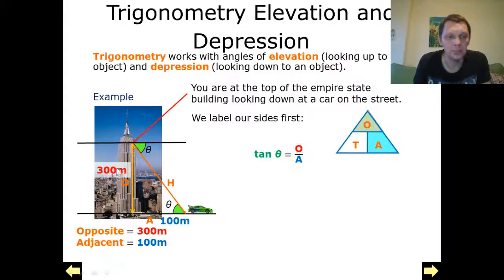My opposite is 300 metres, my adjacent is 100 metres, and I'm going to use tan theta equals opposite over adjacent because those are the two bits of information I've been given to calculate my angle.